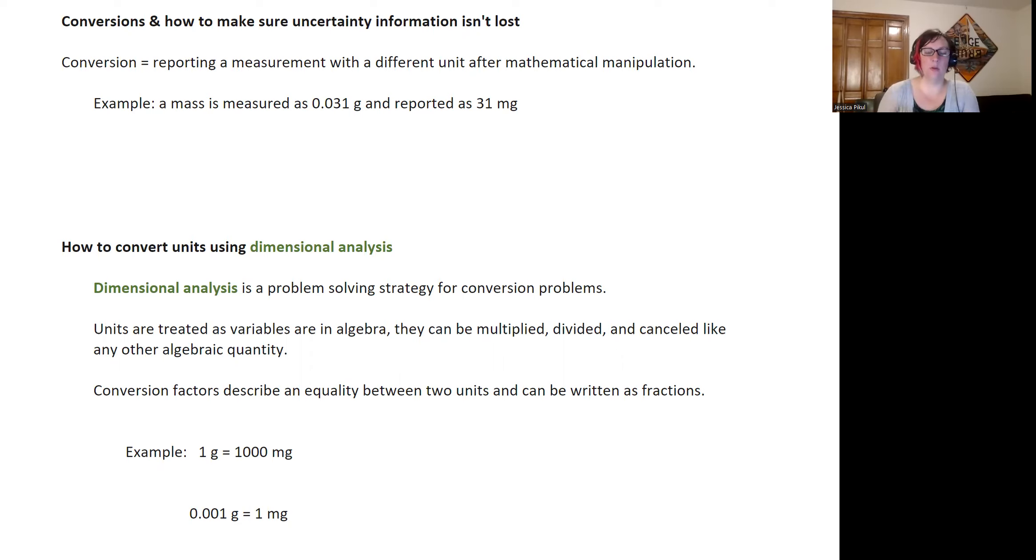So a conversion is when we report a measurement with a different unit than it was measured in. And so we'll go through a conversion to change the unit. So an example would be, let's say I measure something that is 0.031 grams, and I report it as 31 milligrams. So I am going through a conversion process of changing my unit from grams to milligrams. And these numbers are the same. They are the same amount. They're the same mass, but they're being communicated in a different unit.